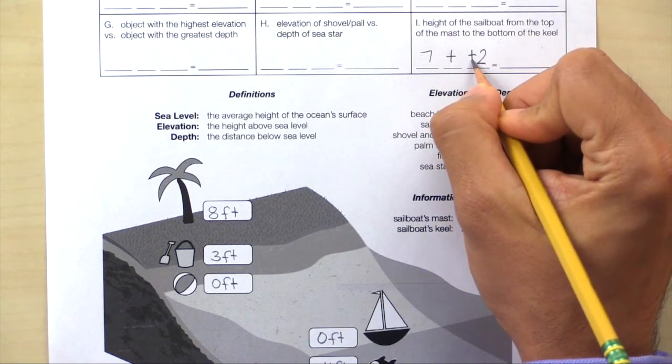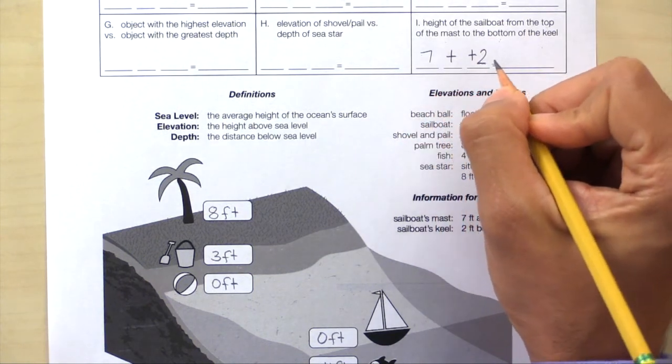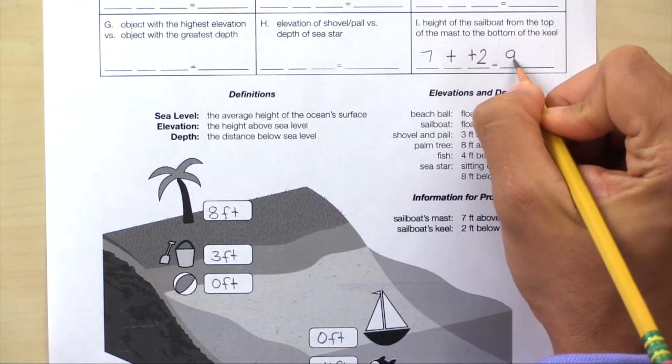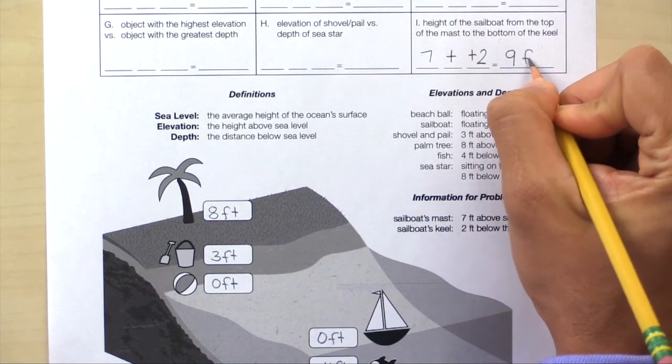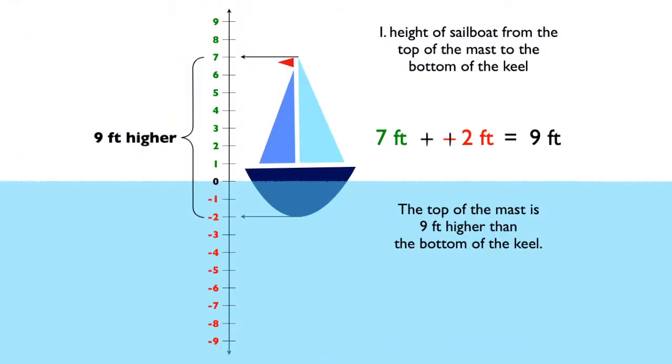1, 2. 7 plus 2 equals 9. So our answer is 9 feet. The top of the mast is 9 feet higher than the bottom of the keel.